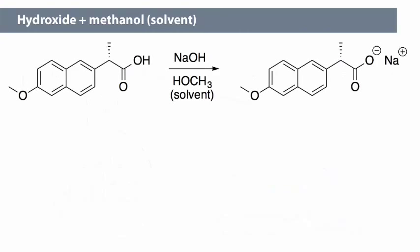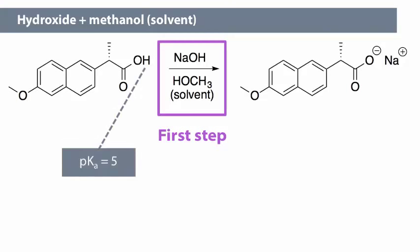The acid-base reaction between hydroxide and solvent is the first step in the reaction, even though naproxen, with its pKa value of about 5, is a stronger acid than methanol. When dissolved in solvent, the sodium hydroxide will quickly collide with many solvent molecules. Methanol molecules will essentially swallow up the hydroxide ions.